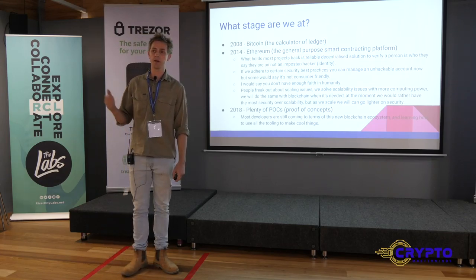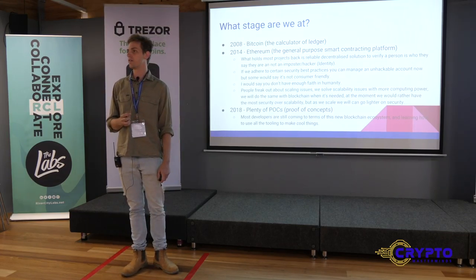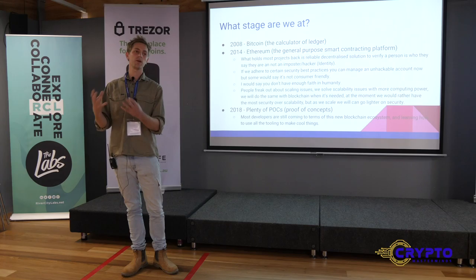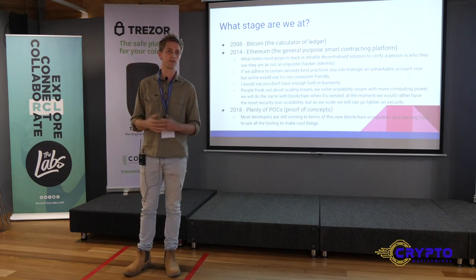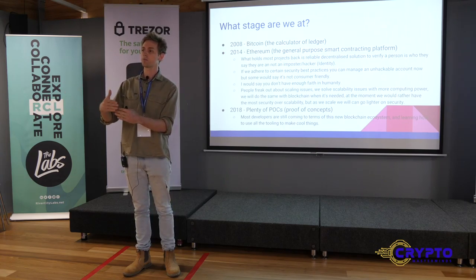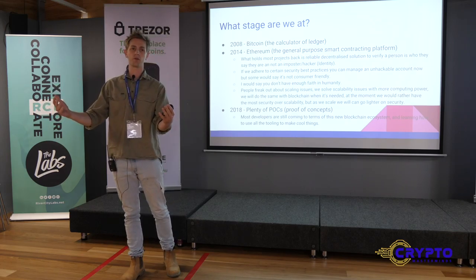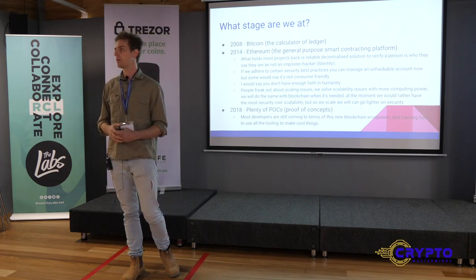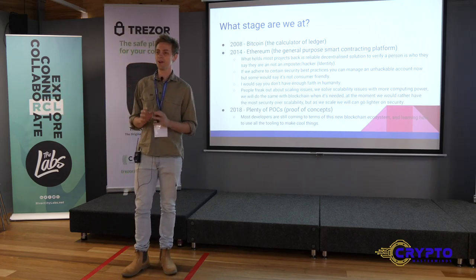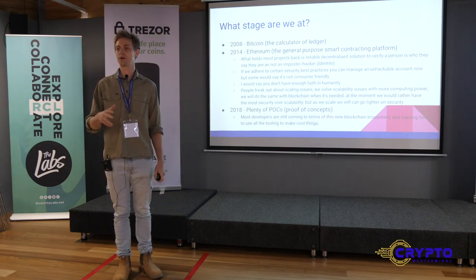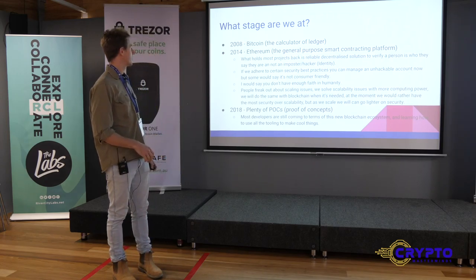It doesn't matter what type of identity system we start using in the future — I personally am not going to trust it because it's still going to be coded by programs I don't trust. What we're doing in Ethereum is proxy contracts, where you put your real identity behind a proxy contract that interfaces with the rest of the world. You can scrap that proxy contract and create a new one for every single dApp you interact with. This is still very new code — there's room for hacking — so I think another 10 years before proxy contracts will be safe.